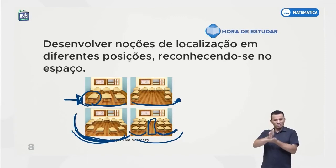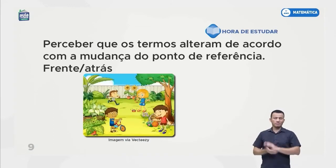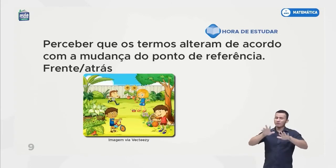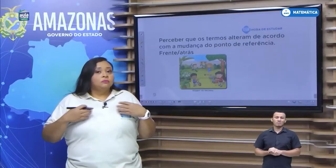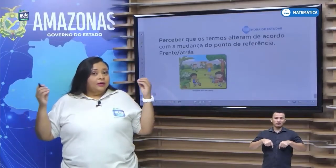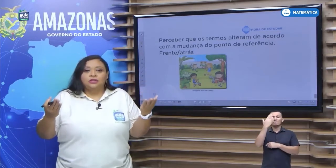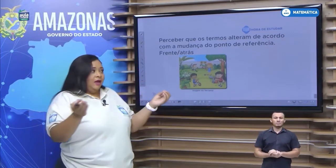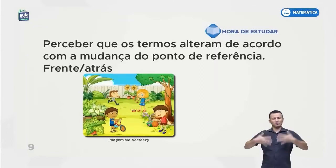Então isso é reconhecer-se no espaço — onde você está e a sua localização. Perceber que os termos alteram de acordo com a mudança do ponto de referência. Qual é o ponto de referência? É onde eu estou. Eu estou aqui, nesta sala, neste cenário. Eu estou de frente para vocês, de frente para as câmeras. Se eu virar, eu fico de costas. Para entendermos melhor, vamos ver a imagem.